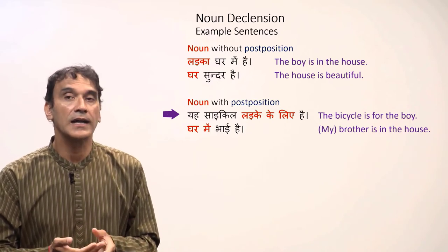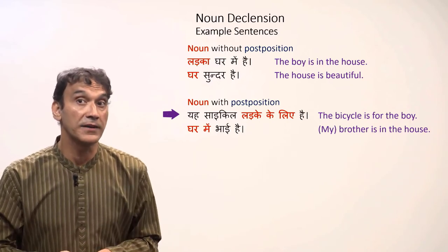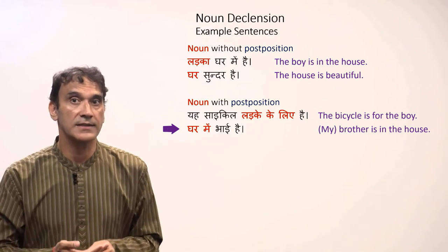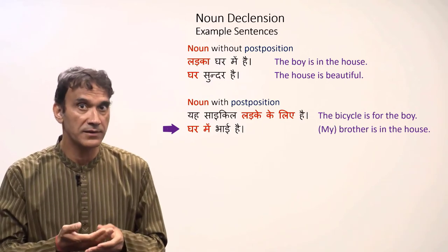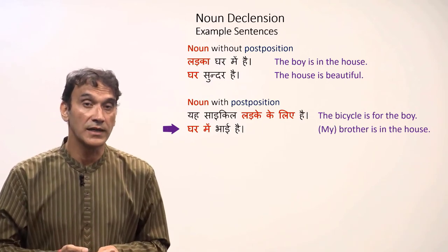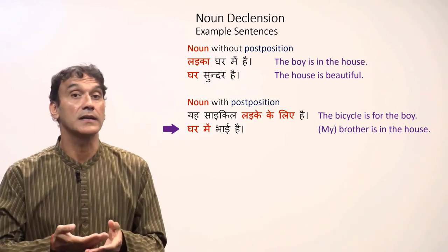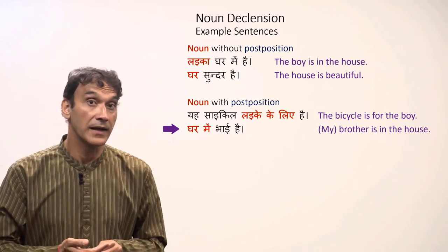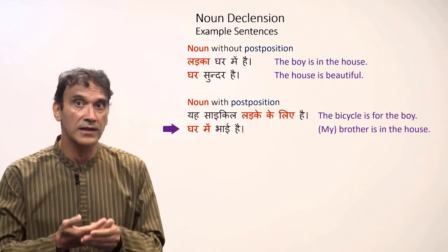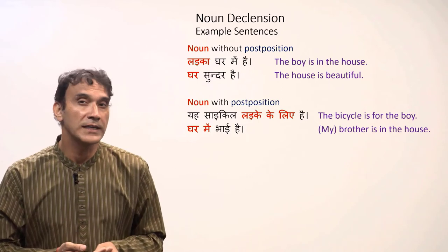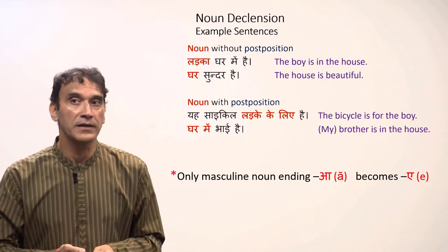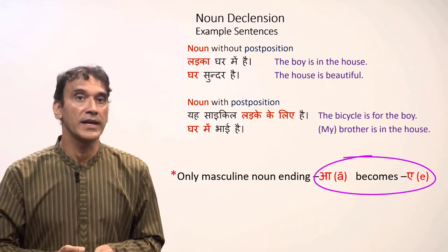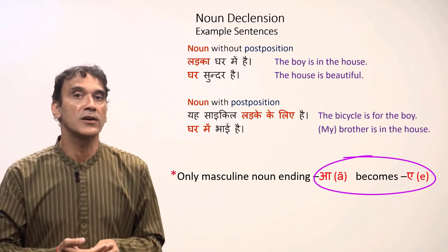'Ghar mein bhai hai' — my brother is in the house. 'Ghar' does not have the ending 'a,' so it stays the same: 'ghar mein.' There is only one thing to remember: a masculine noun ending in 'a' changes to 'e' with a postposition; all other nouns do not change.